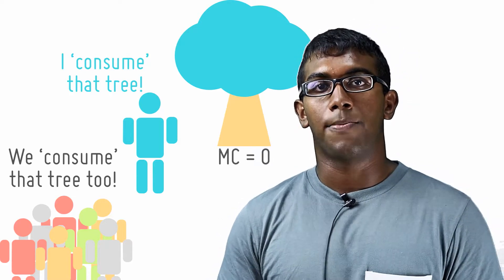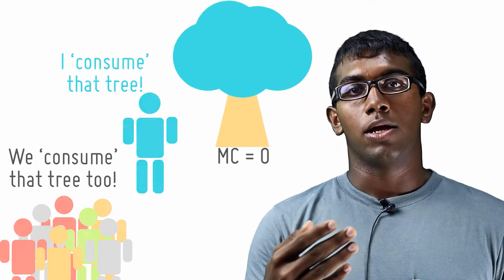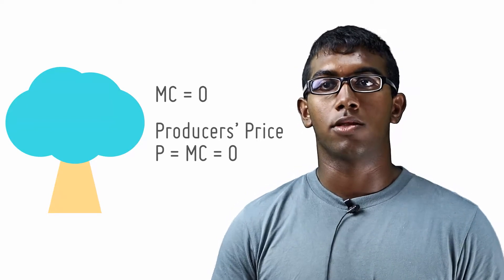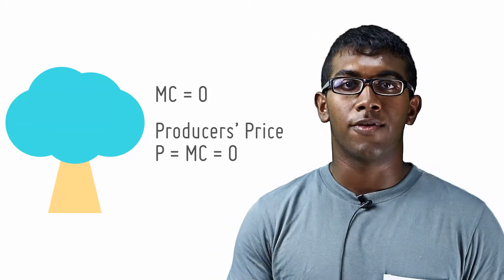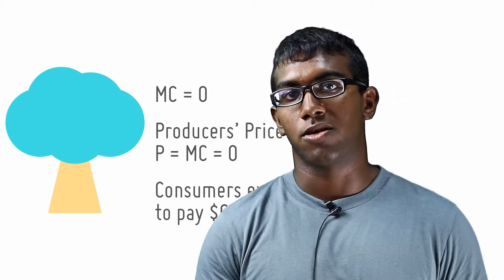In this sense, the marginal cost of using that park is zero. This produces a problem because where you have to be efficient, producers have to set a price at zero where P equals MC. And for efficient consumption on the consumer side, consumers expect to pay zero because the marginal cost is zero.